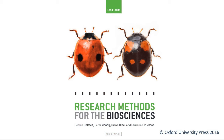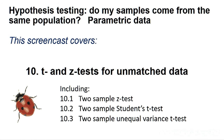Hello, welcome to another Research Methods for the Biosciences screencast for Microsoft Excel. This screencast covers Section 10, T and Z tests for unmatched data, and includes Section 10.1 two sample Z tests, Section 10.2 two sample Student's t-tests, and Section 10.3 two sample unequal variance t-tests.